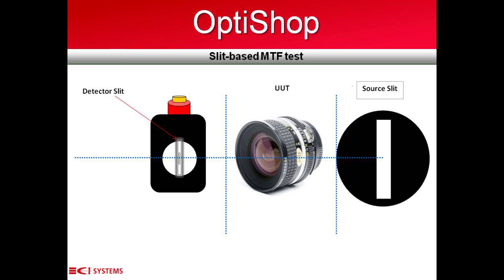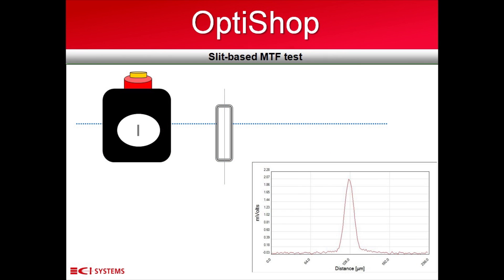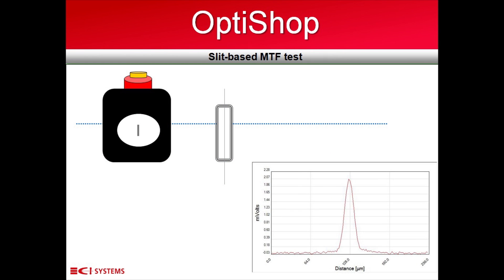We see the unit under test in the middle and the scanning detector on the left side of the screen. The image is collected by the lens under test and an image is created on the UUT focal plane. The scanner is positioned on the focal plane and is used to collect the energy of the projected slit. The scan produces the LSF — the Line Spread Function — which represents the image.